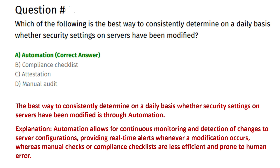The correct answer is option A, automation. Automation allows for continuous monitoring and detection of changes to server configurations, providing real-time alerts whenever modifications occur. Manual checks or compliance checklists are less efficient and prone to human error.